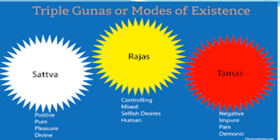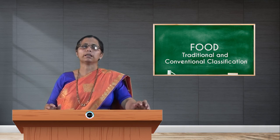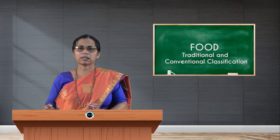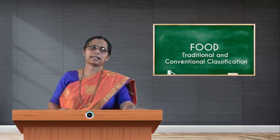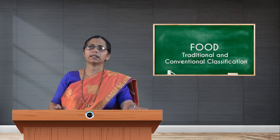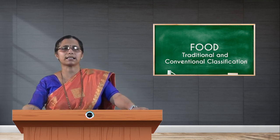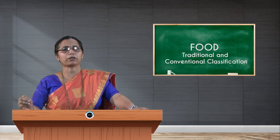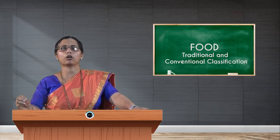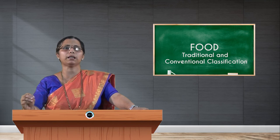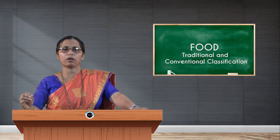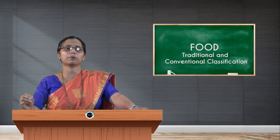Tamas is considered negative and impure food, responsible for lethargy in a person. According to the effect of food over the body, we have Sattva, Rajas, and Tamas. The combination of all three is very helpful in treating disease. Sattva Guna is considered one of the desired effects over the body, and therefore Sattvic food, which is responsible for Sattva Guna, is given utmost importance.